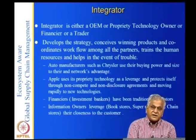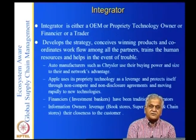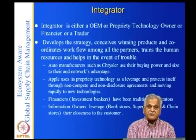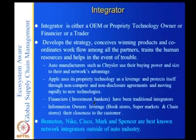When outsourcing something, there is a possibility of somebody stealing your intellectual property. One way Apple protects itself is by moving rapidly from one product to another before someone else imitates it. Financiers and investment brokers have been traditional integrators, and information owners like bookstores, supermarkets, and chain stores leverage their closeness to customers to become integrators. Benetton, Nike, Crisco, and Marks and Spencer are best-known network integrators outside the auto industry.